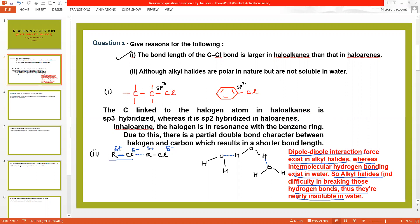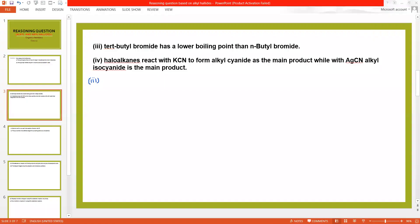Now come to the next one. Tertiary butyl bromide has lower boiling point than n-butyl bromide. Tertiary butyl means that bromide group is directly attached to third degree carbon, and third degree carbon is that which contains three alkyl groups. Three CH3 on three sides and on one side there is BR group.